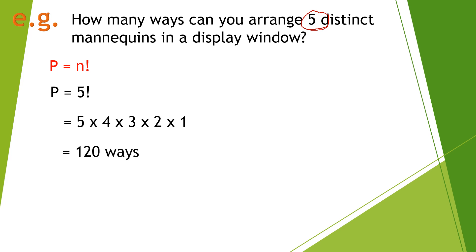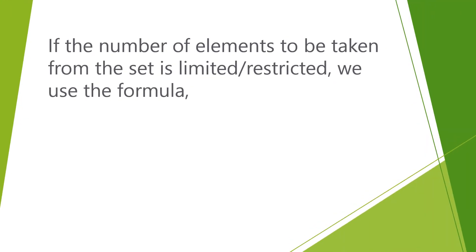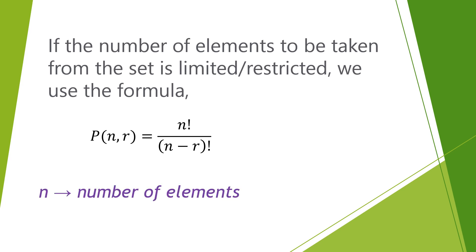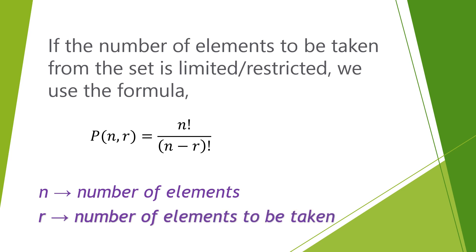Now, what if the number of elements to be taken from the set is limited or restricted? When this happens, we use the formula: permutation of N taken R equals N factorial over the quantity (N minus R) factorial, where N represents the number of elements and R represents the number of elements to be taken or used.